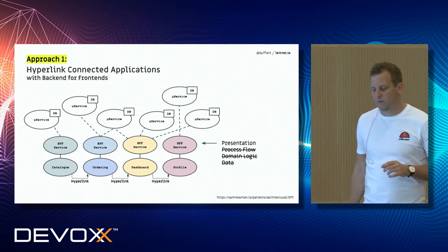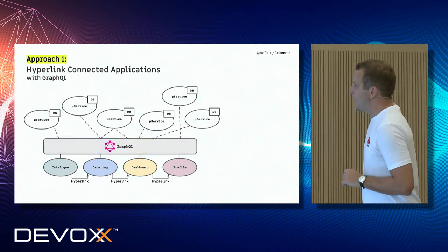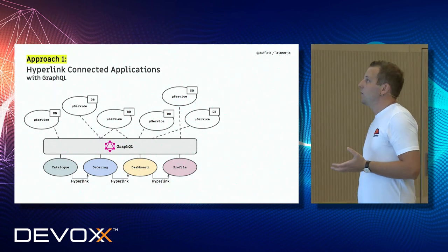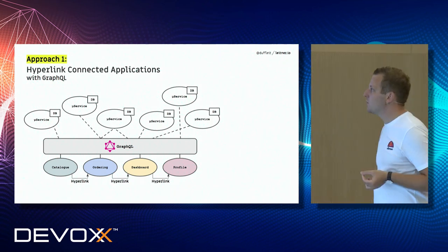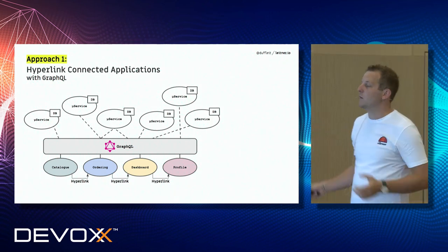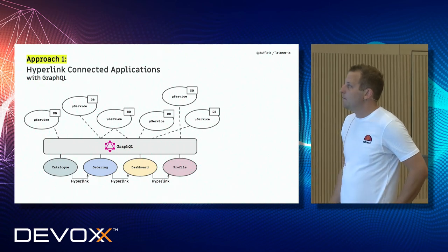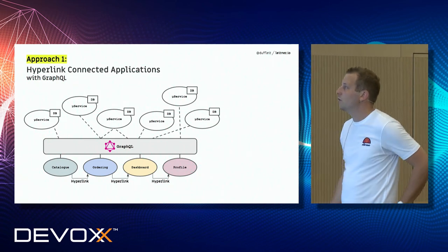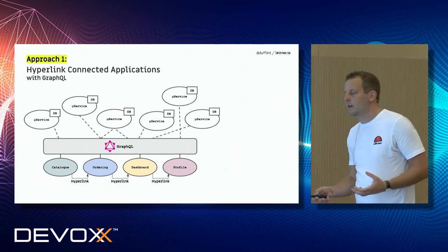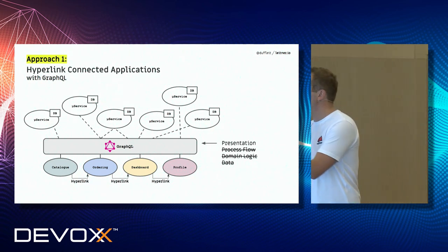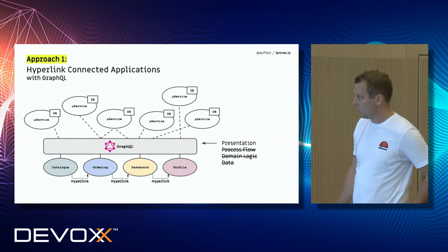The BFF is usually part of the deployment unit of the frontend — if we deploy the frontend, we deploy it together with the backend for frontend, sometimes even in the same repository. A newer backend for frontend approach is GraphQL, which works very well for this purpose because it's more opinionated and doesn't really allow putting in much more than presentation logic.